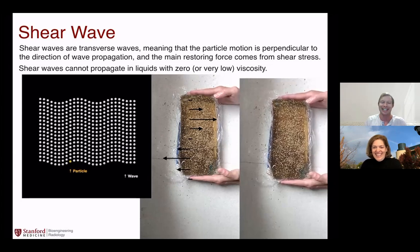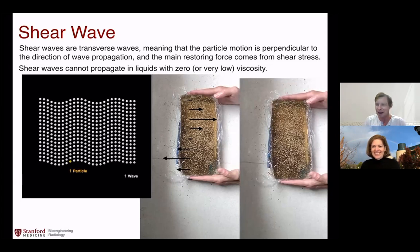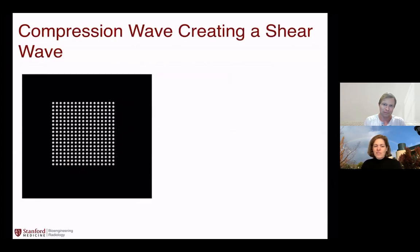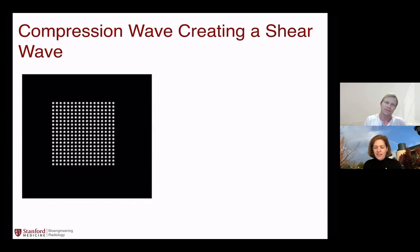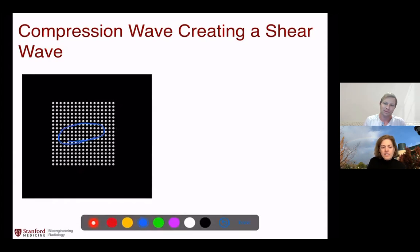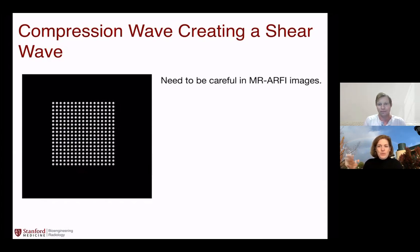So we have compression waves (longitudinal waves) and shear waves as the two dominant types. There are also combinations: a compression wave can create a shear wave. For example, if an ultrasound focus has more intensity at the center of the tissue, you can cause displacement there and generate a shear wave. This is relevant when we talk about MR acoustic radiation force imaging.